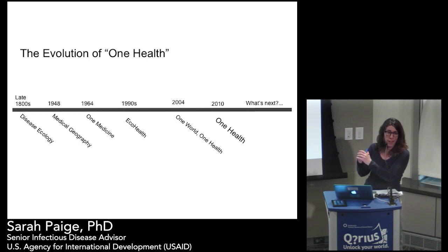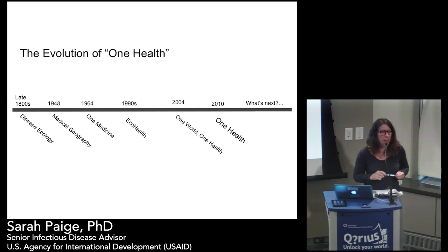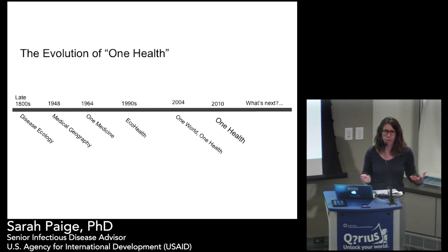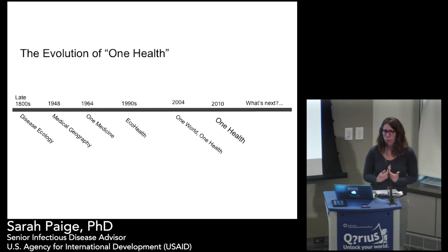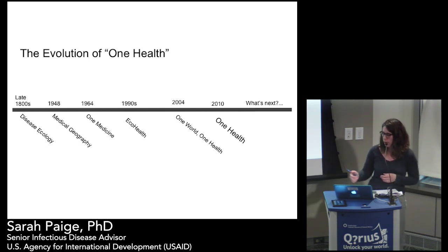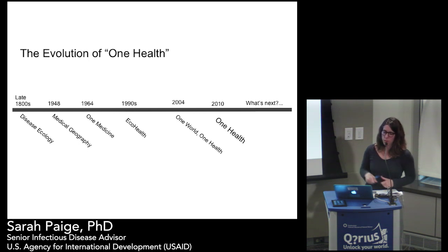Medical geography came on around 1948 with Jock May, a US Surgeon General who created the first atlas of infectious diseases. Medical geography evolved to also cover the science of the distribution of medical services, really focused on infectious diseases, growing into non-communicable diseases and their distribution across space — thinking about how human interaction with the environment enables those diseases and where to put health services in relation to them.